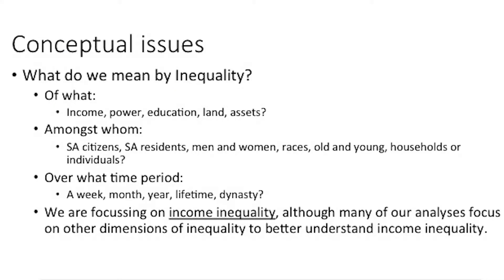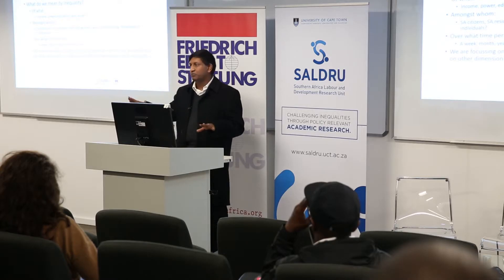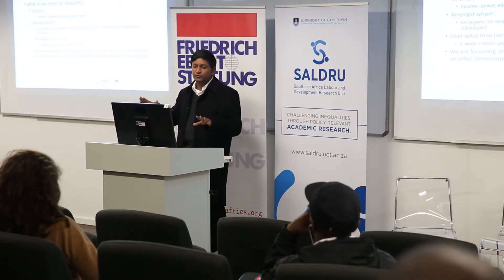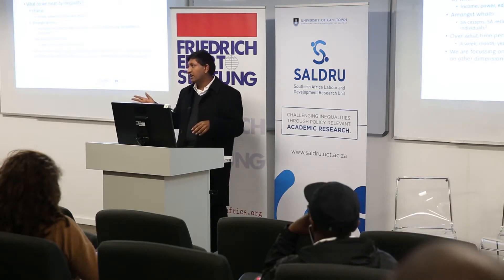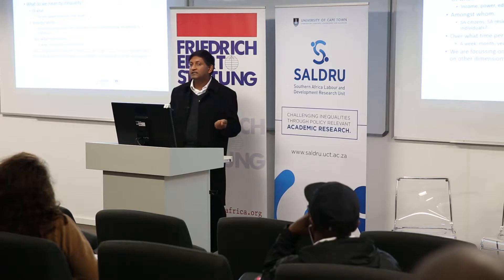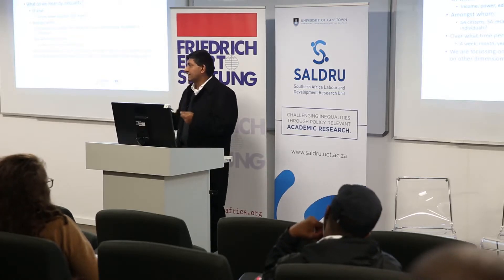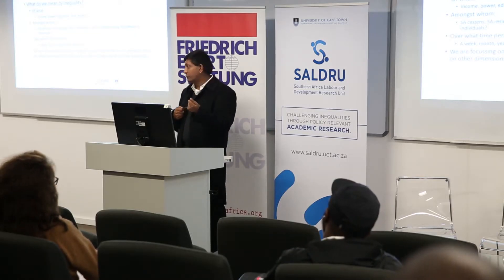A third dimension which again matters is the time period. A simple way to see this: imagine if everyone earned identically the same, but young people earned half what older people earned and you only worked for two periods before retiring. You would find inequality at a moment in time because some people are old and some are young, and it would look like there's some level of inequality in society. But if you ask — well, everyone lives for two periods and everyone gets the low wage to begin with and the high wage thereafter — over the course of a lifetime it would be a completely equal society.